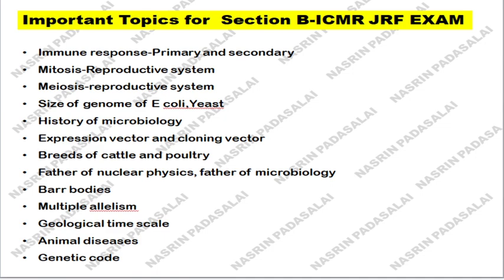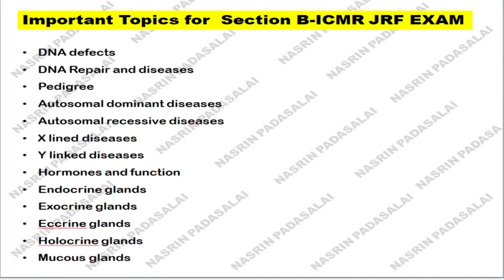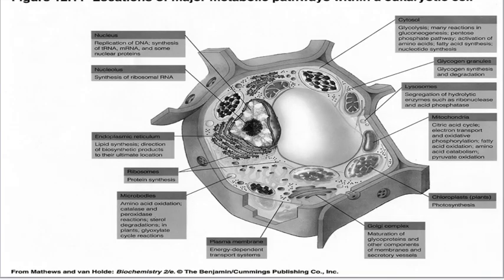Next, animal diseases. Next, know about the genetic code — which particular codon codes for valine, what is the mRNA codon for asparagine, and so on. Next, DNA defects and DNA repair diseases. Know about the pedigree chart and what diseases fall under autosomal dominant, autosomal recessive, X-linked, and Y-linked inheritance. Next, know about the major important endocrine glands — their hormones and functions. Know about endocrine glands, exocrine glands, and what is meant by eccrine gland, holocrine gland, and mucous gland.